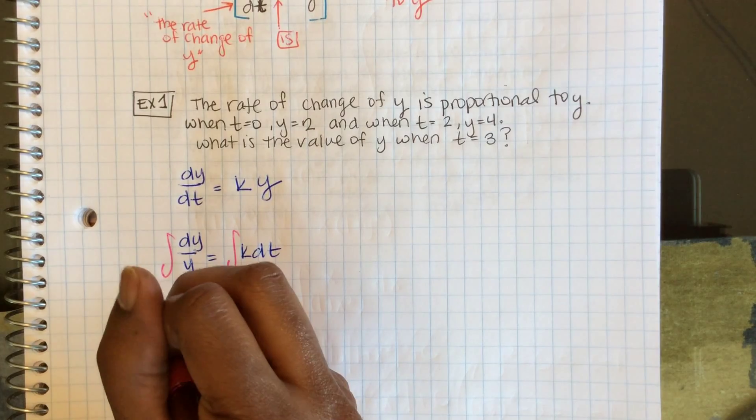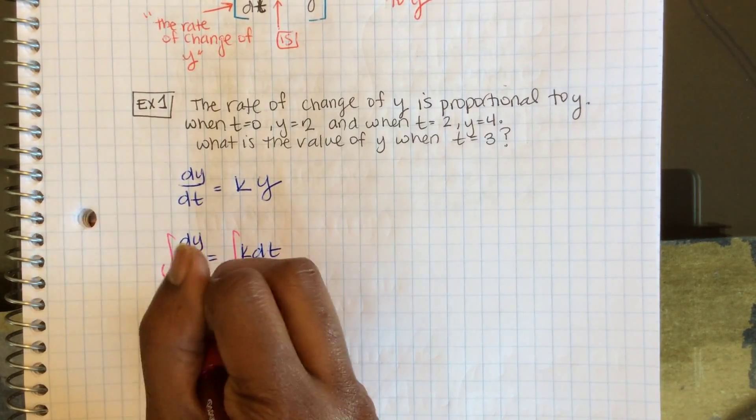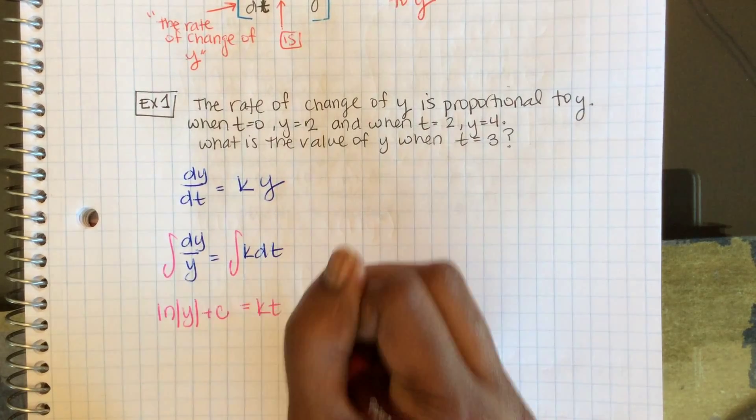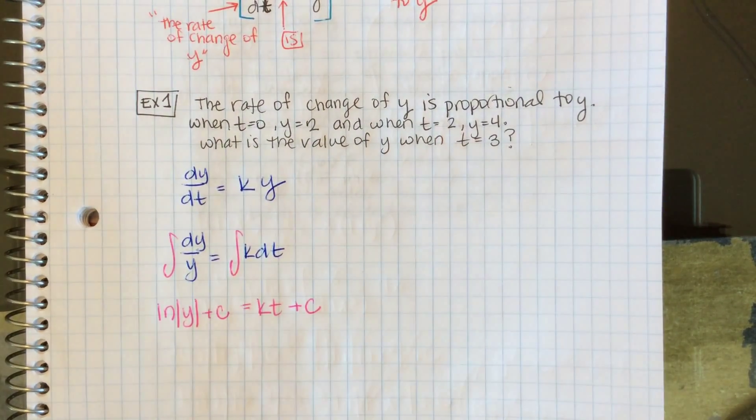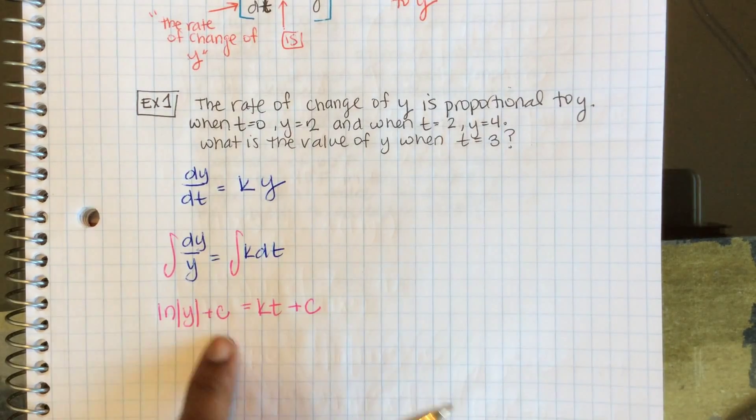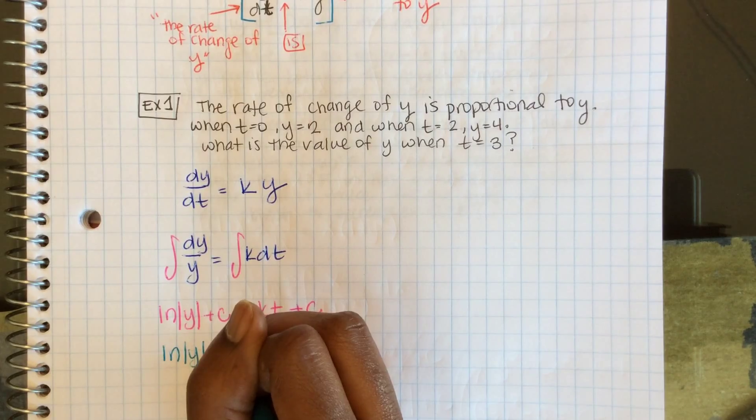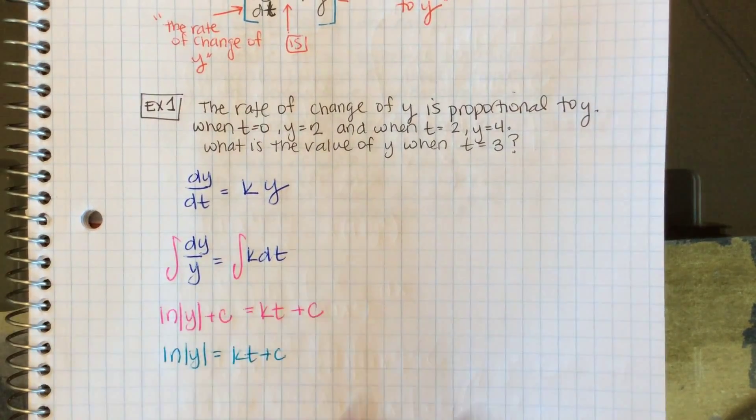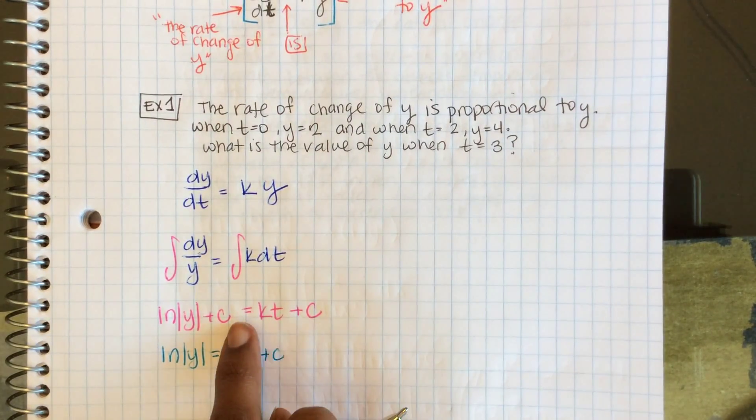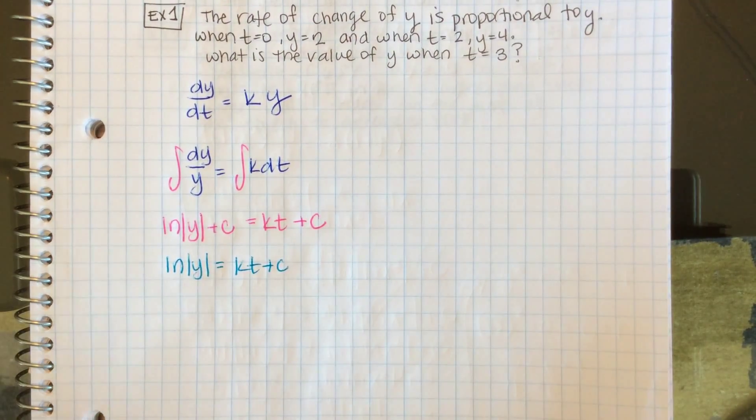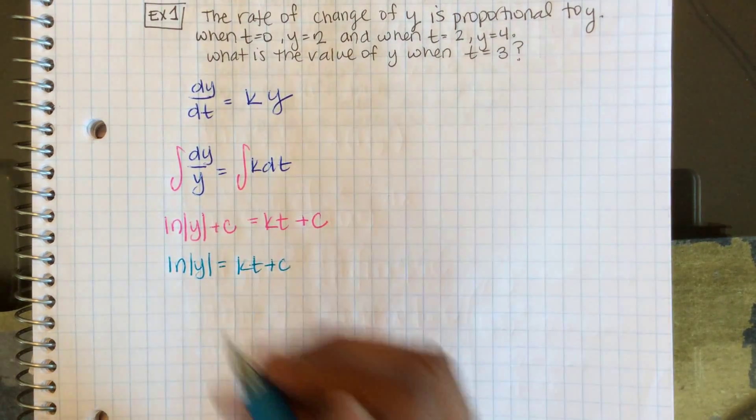Now I'll integrate both sides. The integral of dy/y is ln|y| + c = kt + c. To simplify, subtracting c, ln|y| = kt + c. A constant minus a constant is still a constant.